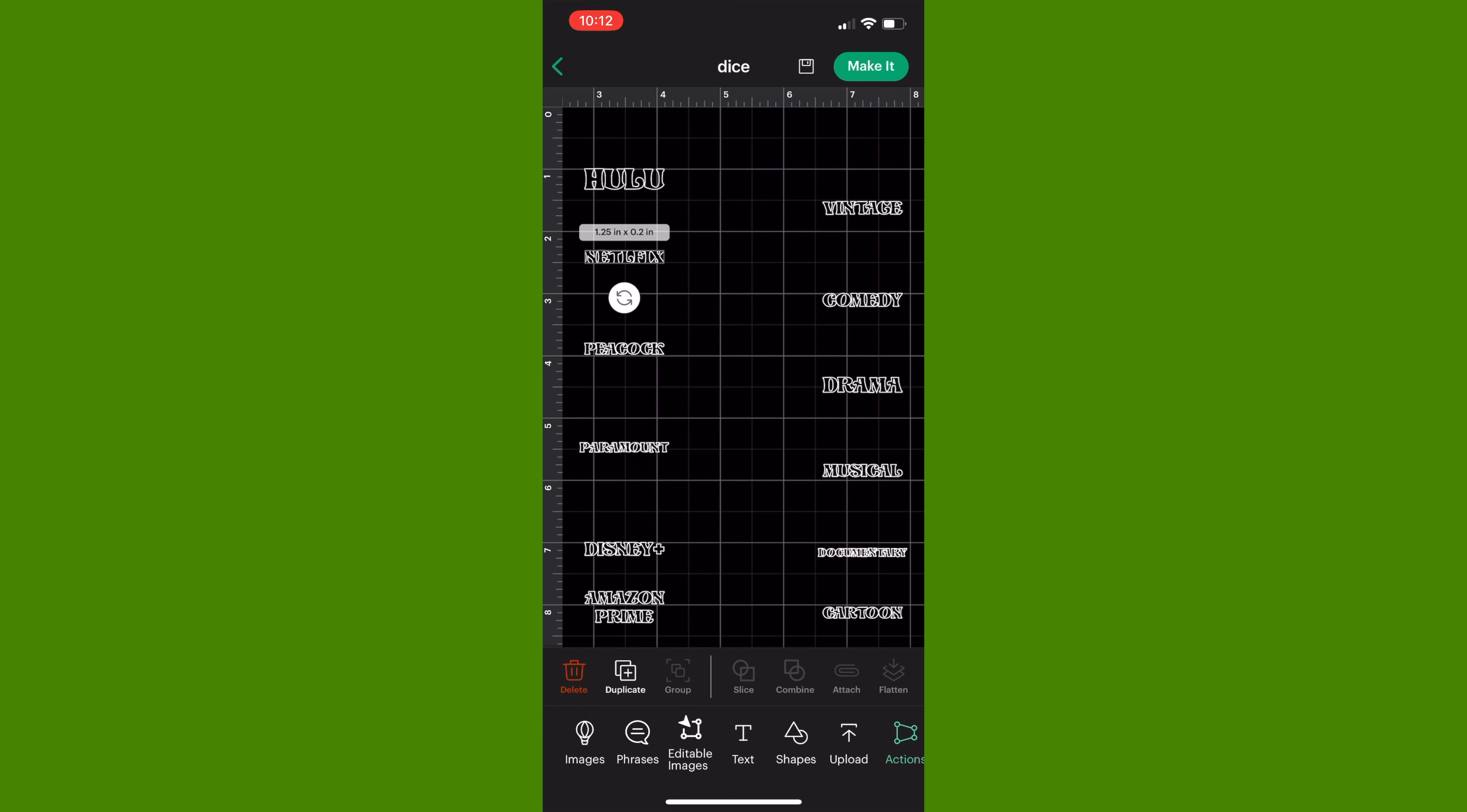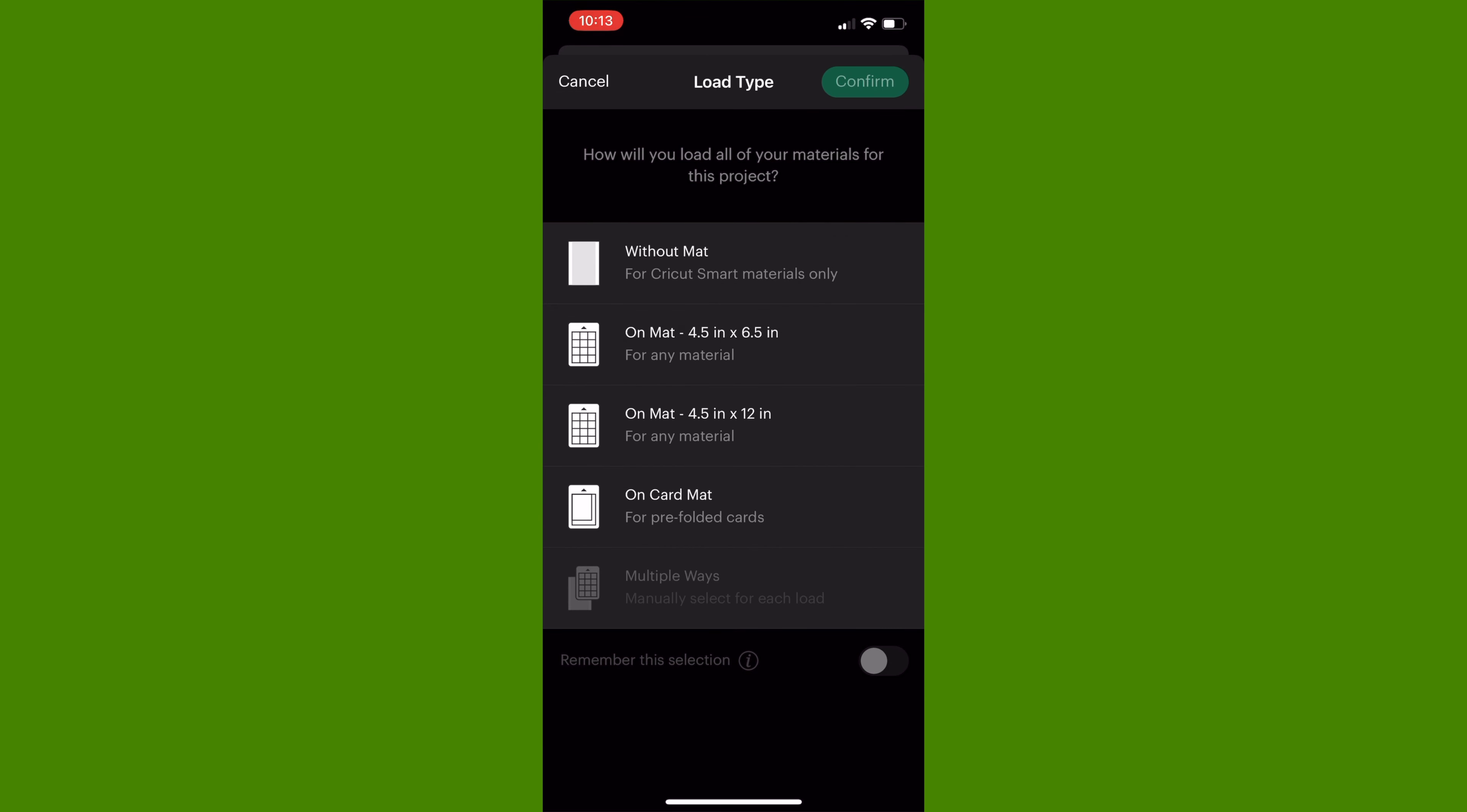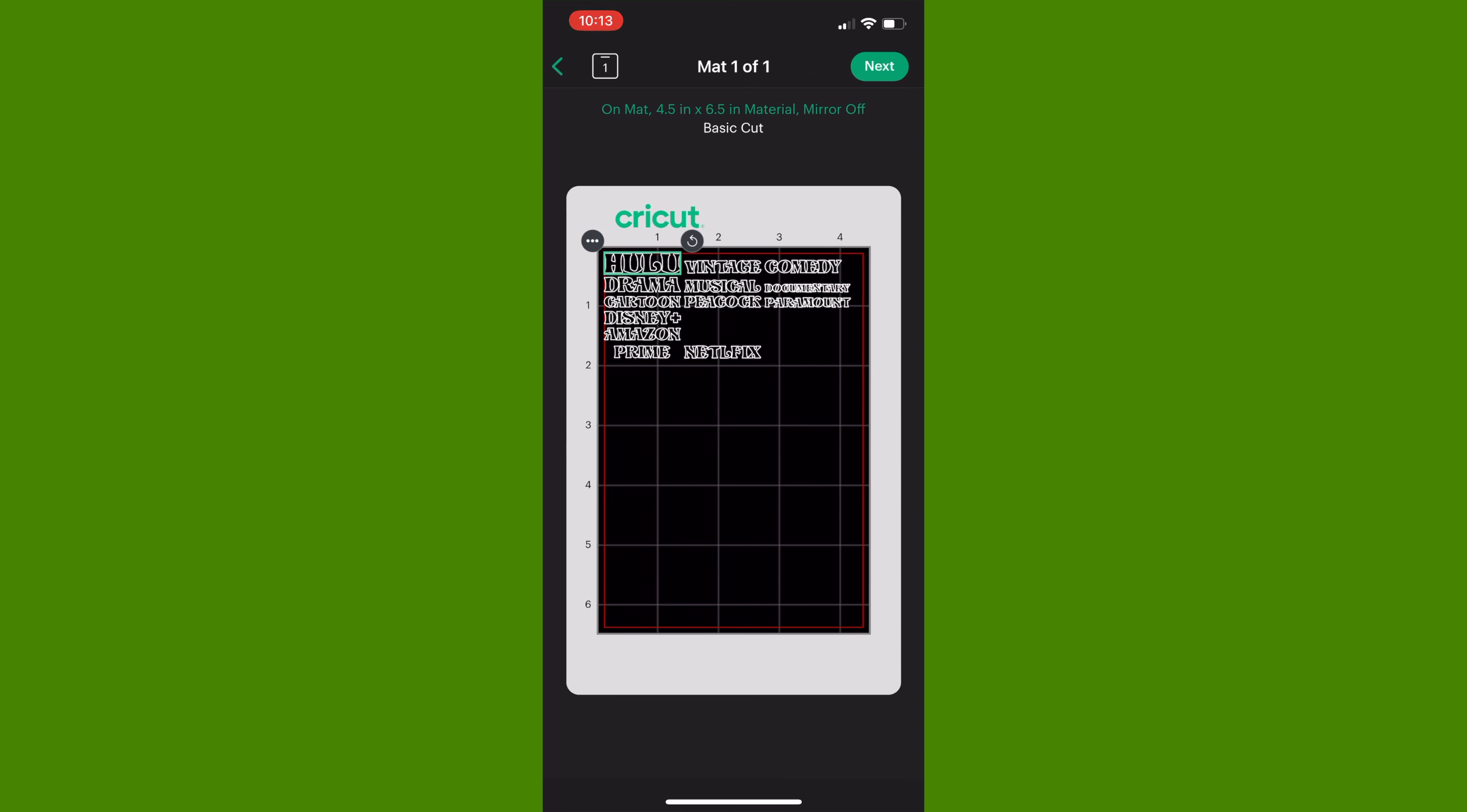To add the words to our dice, we're going to use some vinyl. This is Starcraft permanent HD vinyl. I chose this vinyl specifically because our words are going to be really small, and I've heard that this brand does really well with smaller designs. I have my Dollar Tree Cricut Joy mats and I'm just going to apply my vinyl down and push it down with my fingers.